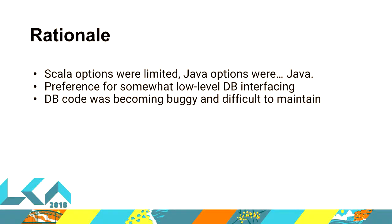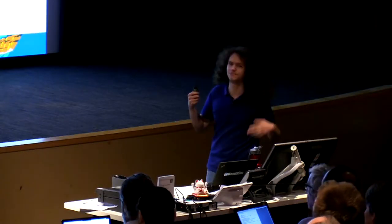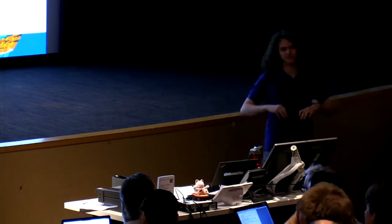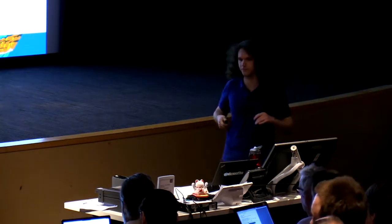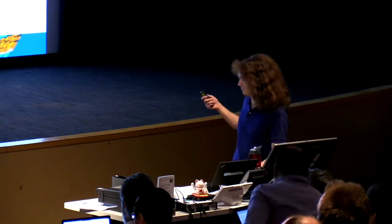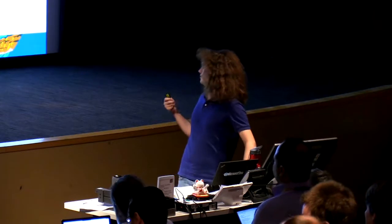The rationale for this code generator: Scala options were kind of limited as they often are, Java options were not really very nice to work with in Scala, and we also have a preference for lower-level database interfacing — not with an ORM — so we can actually tell exactly what's going on and tune things for performance more easily. We were using Doobie and found that our DB code was becoming a little bit difficult to maintain, with mistakes being introduced. Basically all the reasons I mentioned before regarding maintainability.